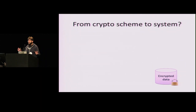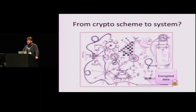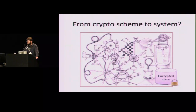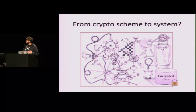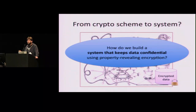This is a really cool PRE scheme, but it's not clear how to build a system out of it. Since we're here at the Real World Crypto Conference, we should think about how to build real systems — we can't just use a crypto scheme in practice, we need to build a system around it. There hasn't really been any holistic work on how to build a whole system that preserves the confidentiality of the user's data. So the basic question we asked in this work is: how do we build a system that uses PRE to provide confidentiality to users?